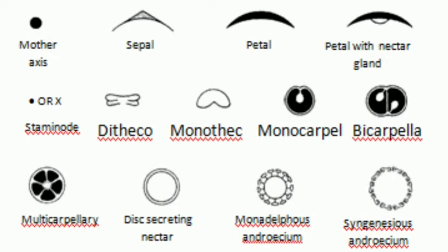A sepal is shown without shading, and if the same symbol is shaded with color, it is showing a petal — and it has no edge. You can see that the sepal has an edge in the diagram, but the petal does not have an edge. And if the petal has a nectar gland, then it must be shown with a small arch inside.